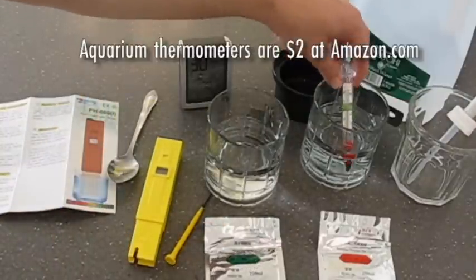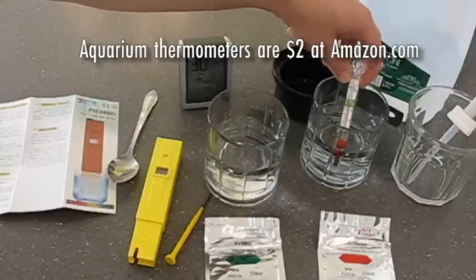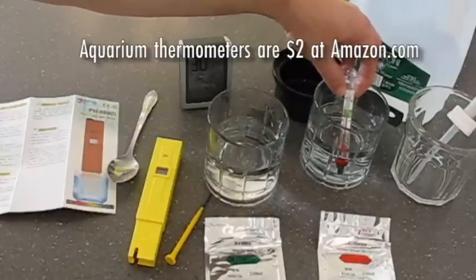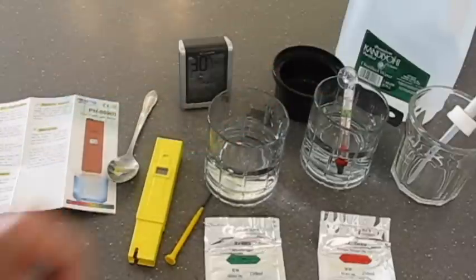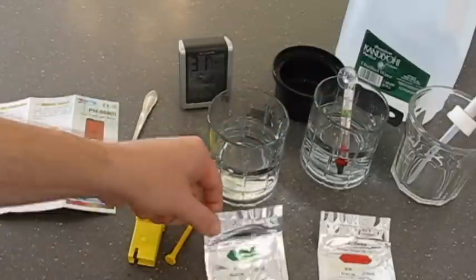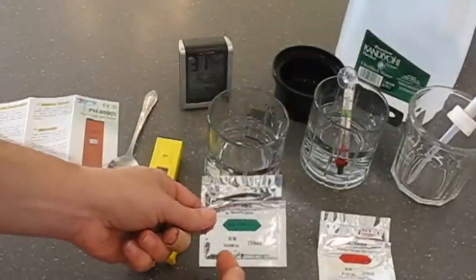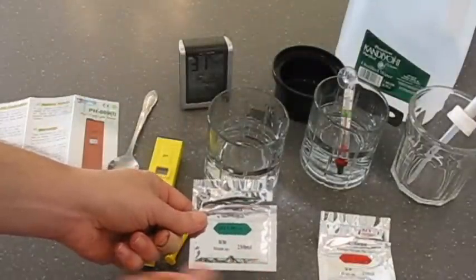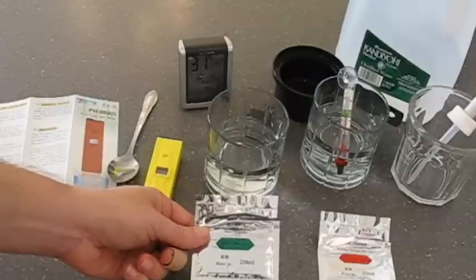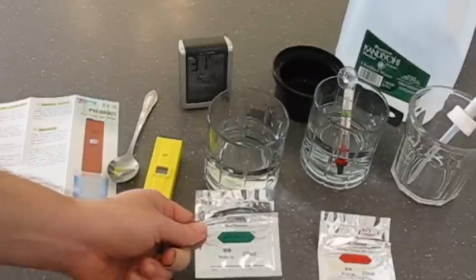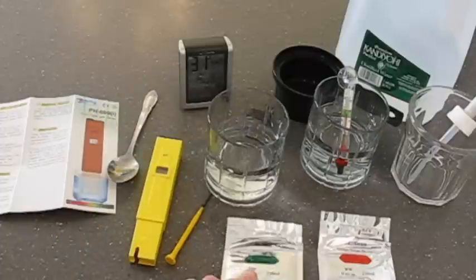So what I have here is I have a thermometer that's normally used in fish tanks, and I have two glasses of distilled water. This doesn't explain it, but from what I have figured out, it says make up 250 milliliters. What that means is mix this with 250 milliliters of water. 250 milliliters of water is roughly one cup of water, so I have one cup of water in each glass here.